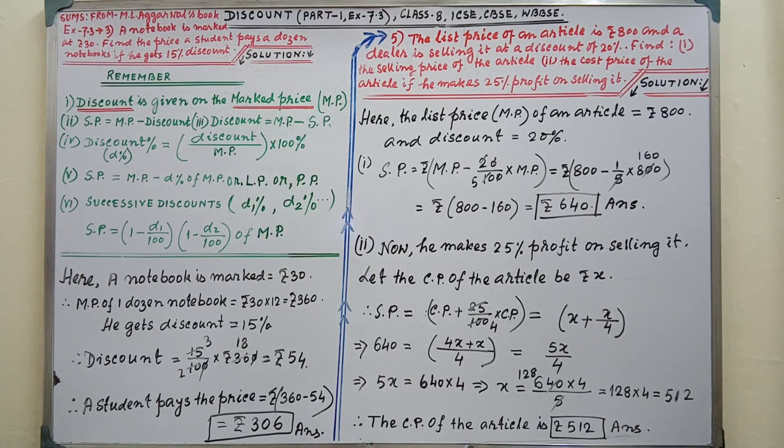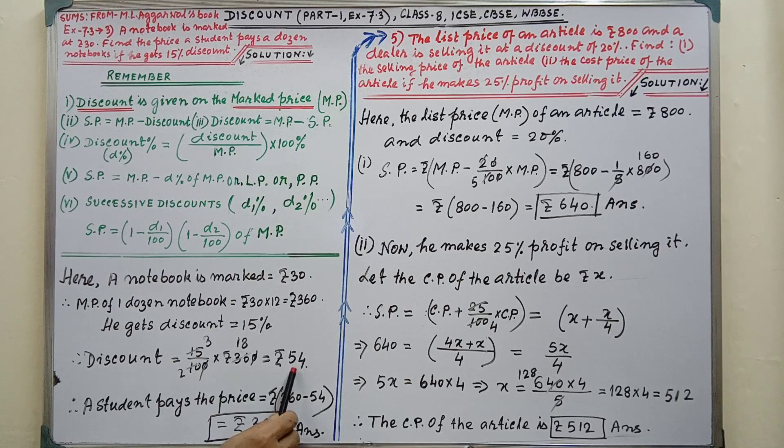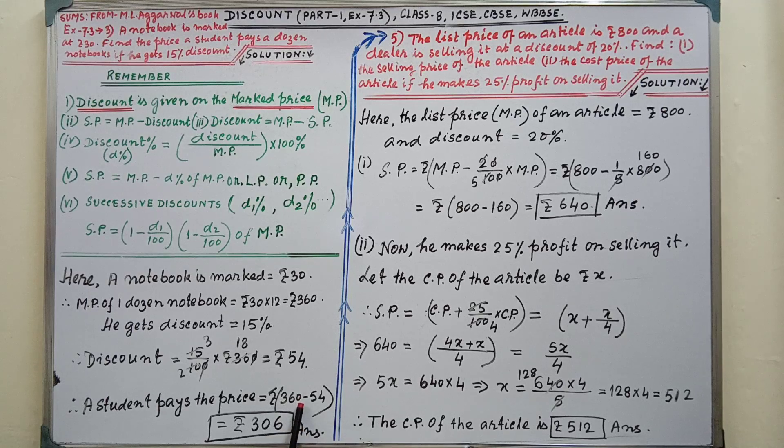Now we have to find out the student pays how much. Therefore the student pays the price Rs 360, that is the marked price, and this discount we have to subtract from marked price. And by that we are getting Rs 306. Rs 306 is the answer. Next sum.